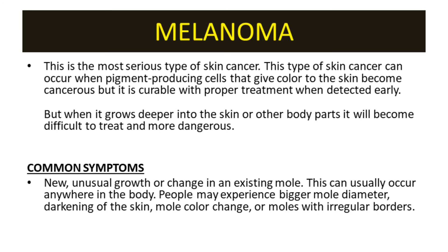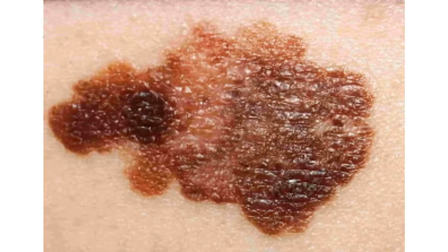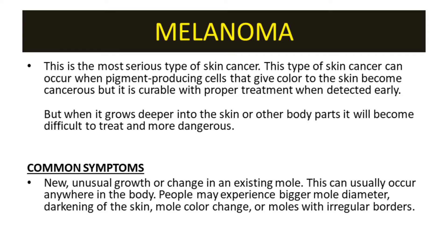The second type is melanoma — the most serious type of skin cancer. It can occur when pigment-producing cells that give color to the skin become cancerous. It is curable with proper treatment when detected early, but when it grows deeper into the skin or spreads to other body parts, it becomes difficult to treat and more dangerous. Common symptoms include new unusual growths or changes in an existing mole, and it can occur anywhere in the body.